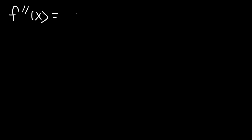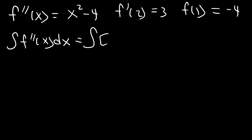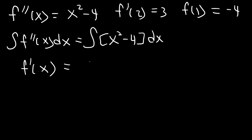Let's try another example. The second derivative is x squared minus 4, f'(2) is 3, and f(1) is negative 4. Go ahead and solve the differential equation. So let's start by integrating both sides. The antiderivative of the second derivative is the first derivative. On the right, the antiderivative of x squared is x cubed over 3, for negative 4 it becomes negative 4x, plus c.